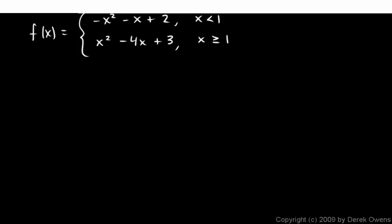And if it does, we need to find out what it is. And if it doesn't exist, we will still use limit notation to describe how the function behaves at that point.